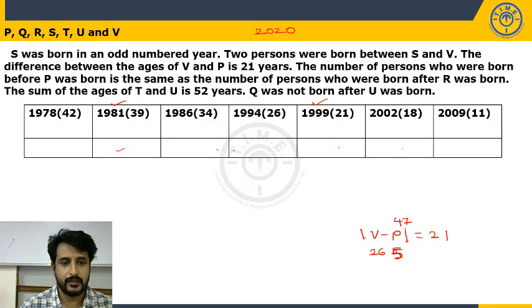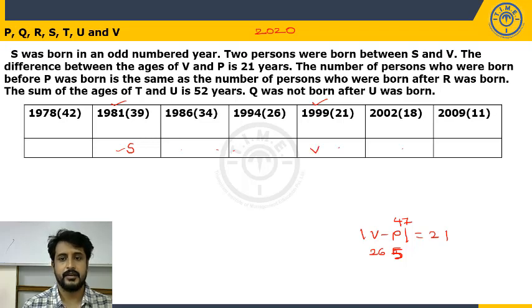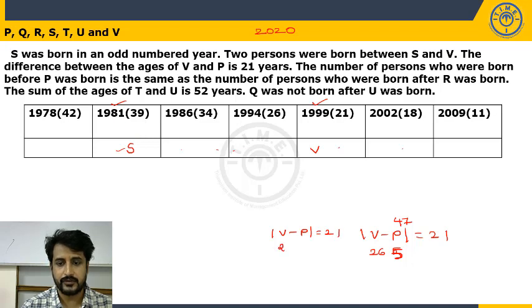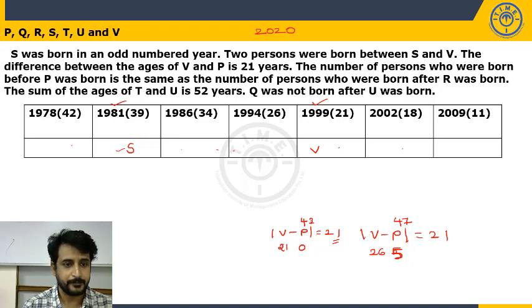Testing S in 1981: V's age = 21. Difference between V and P is 21. Lower would be 0 (no person has age 0). Higher would be 42, which exists. So P = 42 — valid. Testing S in 1999: V's age = 39. P = 39 − 21 = 18, which exists in our list. So P = 18 — also valid. Both cases remain valid at this point.